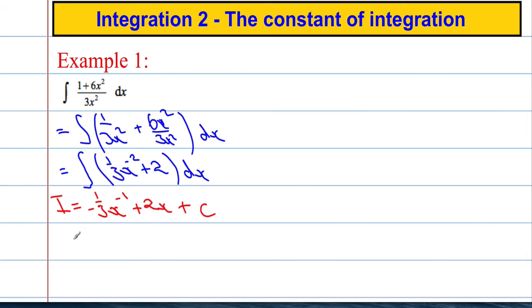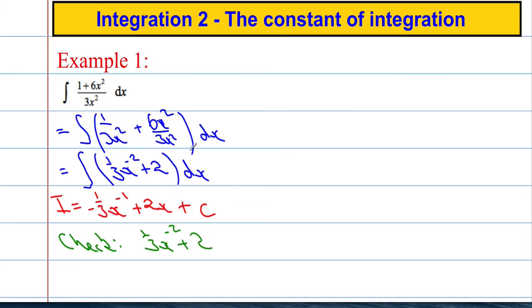You can always check your answer by differentiating. So doing a check: negative 1 multiplied by negative 1 over 3 gives me 1 over 3, decrease that power by 1 to get x to the negative 2, plus differentiating 2x gives 2, and the derivative of a constant is 0. So we get 1 over 3 · x to the negative 2 plus 2, which is exactly what we had to begin with.